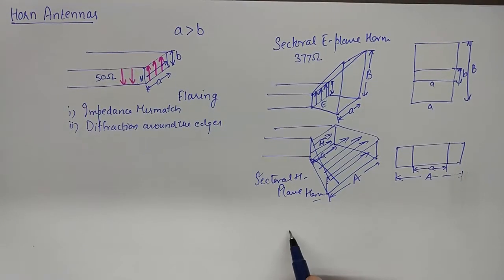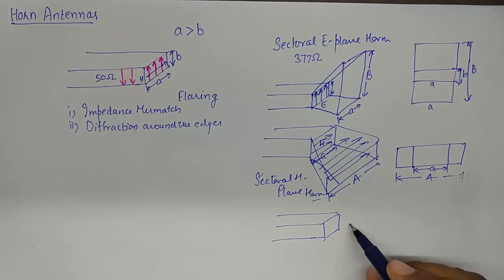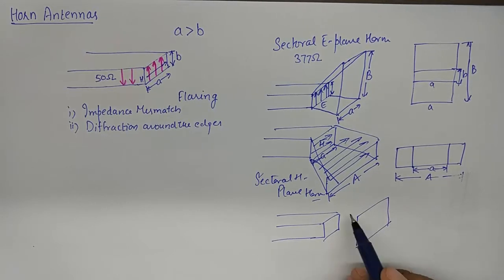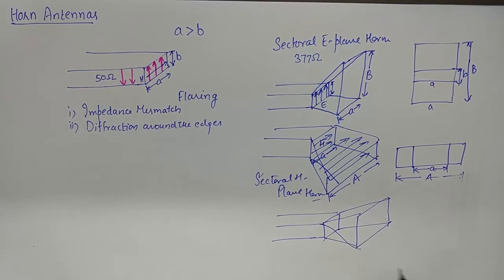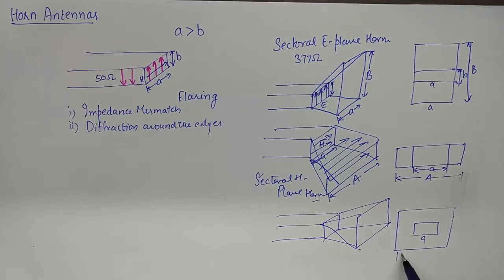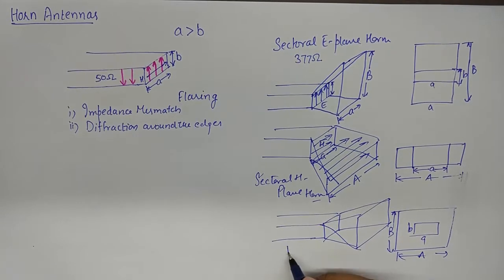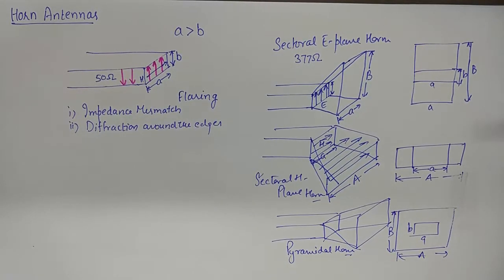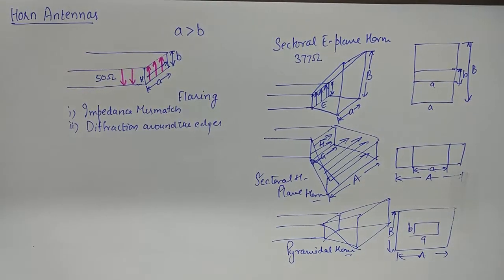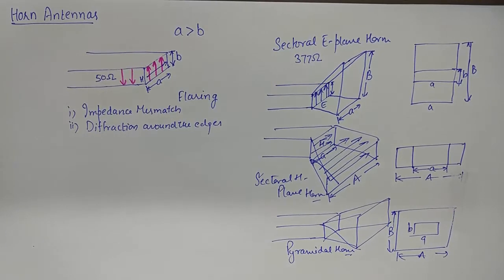Finally, if we increase both the length and the width — changing small A to capital A and small B to capital B — this type of antenna is known as a pyramidal horn. We design these horn antennas depending on our requirements: whether we want to flare E, or H, or both E and H. The most common form of horn antenna is the pyramidal horn.